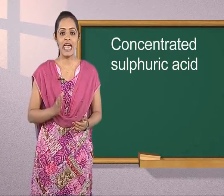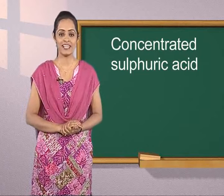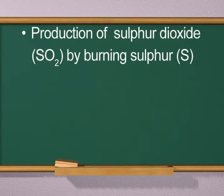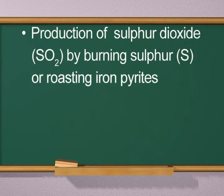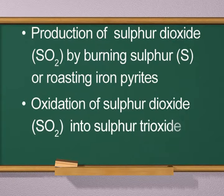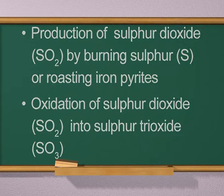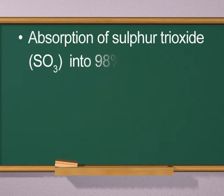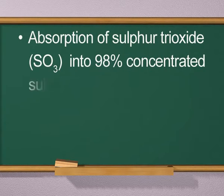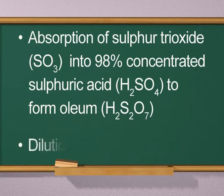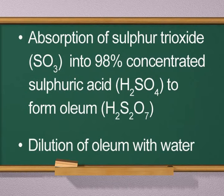The process involves the steps shown on the screen: production of sulfur dioxide by burning sulfur or roasting iron pyrites; oxidation of sulfur dioxide into sulfur trioxide; absorption of sulfur trioxide into 98% concentrated sulfuric acid to form oleum; and dilution of oleum with water.